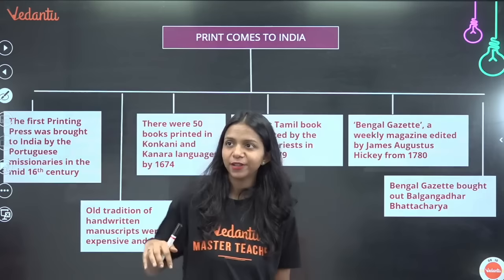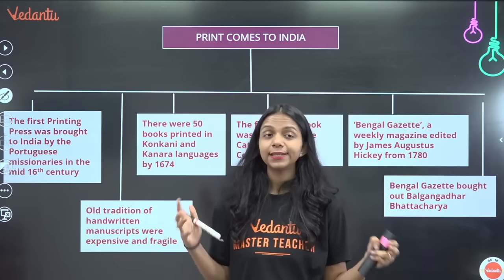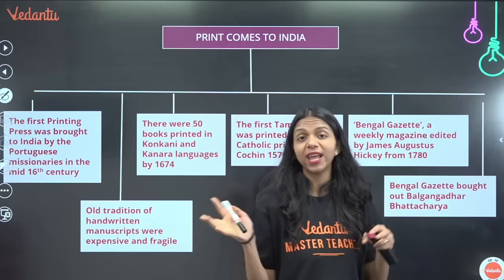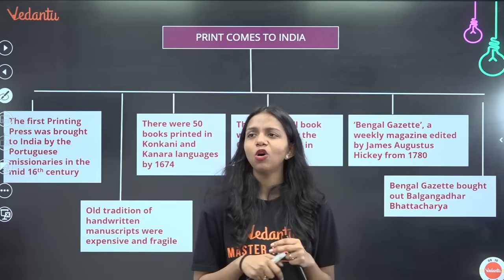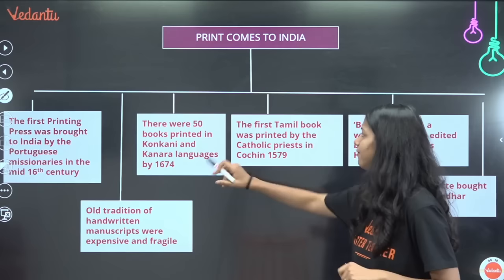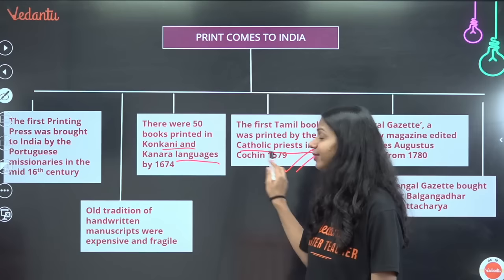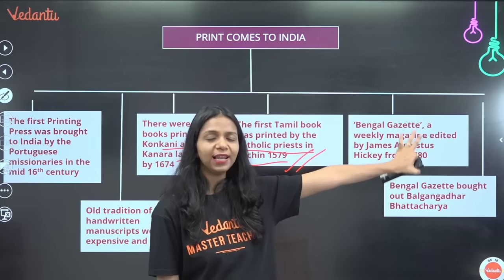Now, print comes to India. The first printing press was brought to India by Portuguese missionaries who came to India in the 16th century in Goa. Before the printing press, India had an oral tradition — the Pathshala system — where teachers taught children orally without any book. Manuscripts were expensive. The first 50 books were printed in Konkani and the Kanarese language. The first Tamil book was printed by a Catholic priest in Kochi in 1579. James Augustus Hicky started the Bengal Gazette, wrote very interesting news, was later persecuted, and the paper was eventually bought by Bal Gangadhar Bhattacharya.